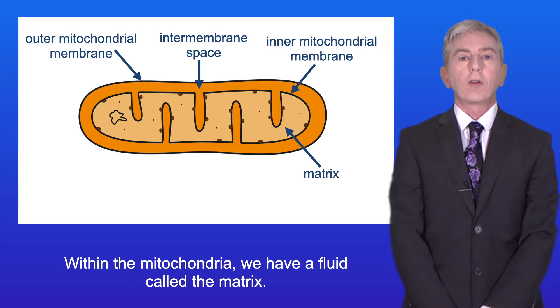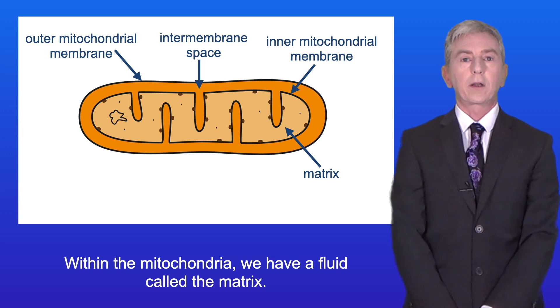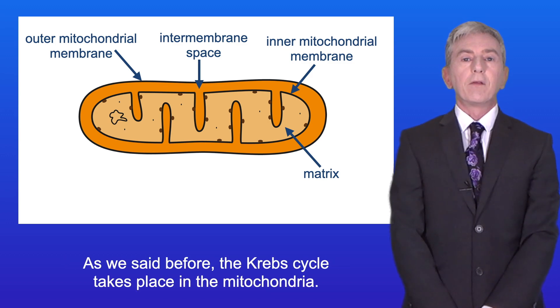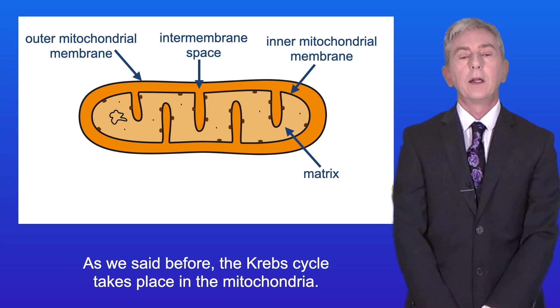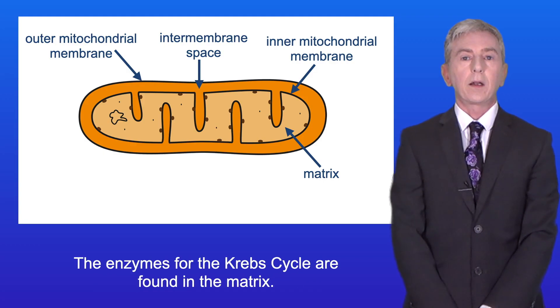Within the mitochondria we have a fluid called the matrix. The Krebs cycle takes place in the mitochondria and the enzymes for the Krebs cycle are found in the matrix.